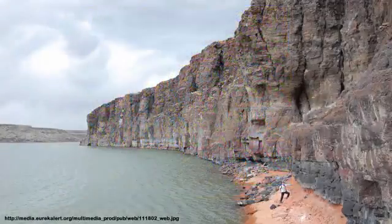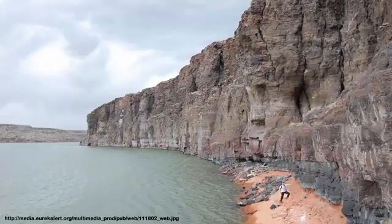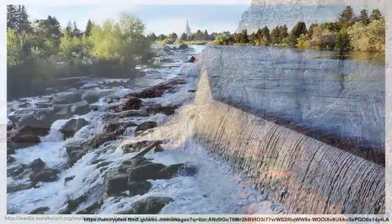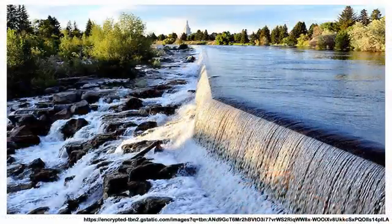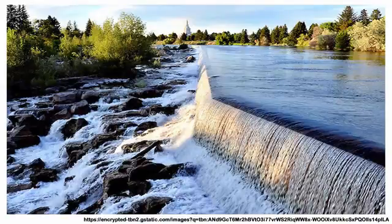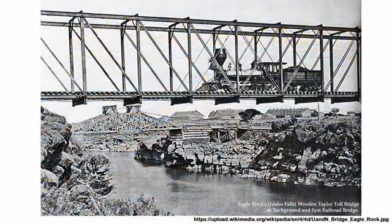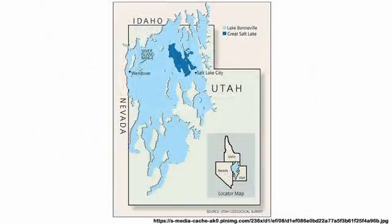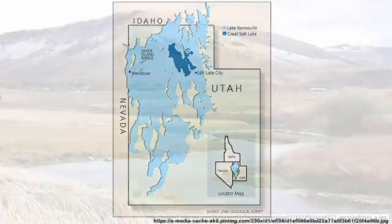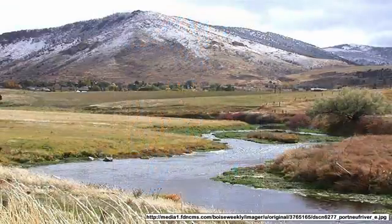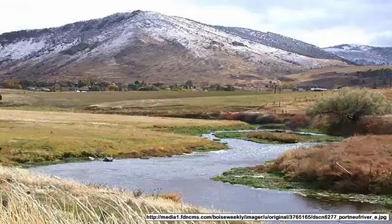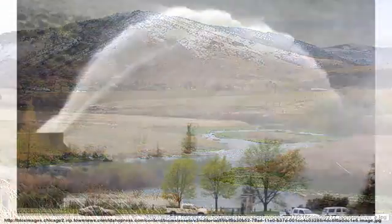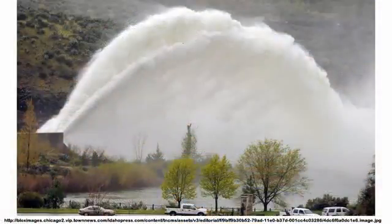About 42,000 years ago in the Snake River Plain, a 40-mile-long lake known as American Falls Lake formed as a result of a lava dam blocking the Snake River at Eagle Rock near present-day Idaho Falls. This lake survived for nearly 30,000 years until Utah's Lake Bonneville catastrophically spilled over the Port Neuf River and into the Snake River in an event referred to as the Bonneville Flood.